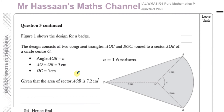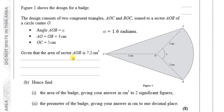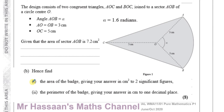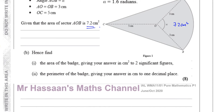Part B says: hence find the area of the badge, giving your answer in centimeters squared to two significant figures. We've got to find the area of the whole badge. We already know the sector area is 7.2 centimeters squared. We need to find the area of these two triangles. Finding the area of one will be enough because we can multiply by two — since they are congruent — and add it to 7.2.